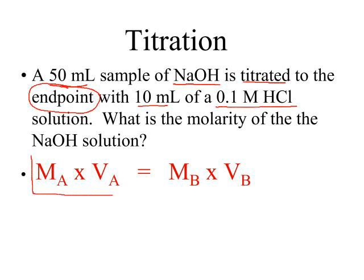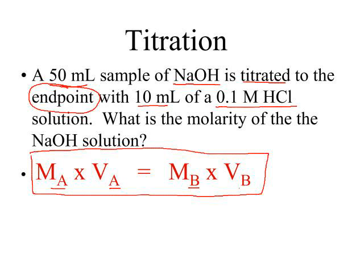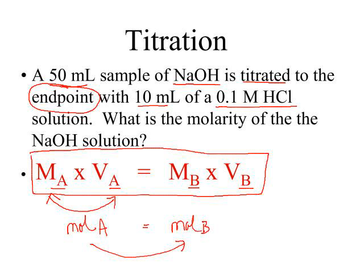A typical way to work these problems is with the equation given here. This is molarity of the acid times volume of the acid is equivalent to molarity of the base times volume of the base. If you think about it, molarity times volume is always equal to moles, so this becomes moles of acid equals moles of base. When the moles of acid and the moles of base are equal to each other, you have reached the endpoint of the titration. By setting the two equations equal to each other and solving for the missing variable, you will have found the molarity of that base.